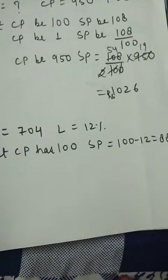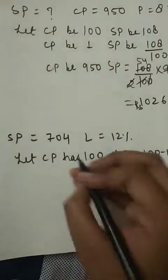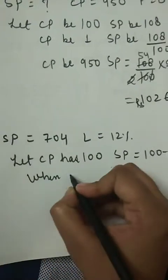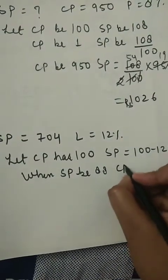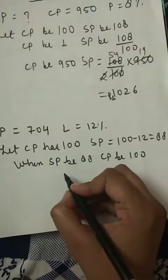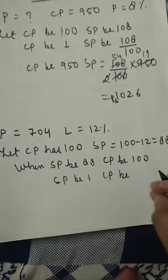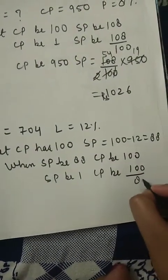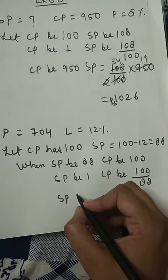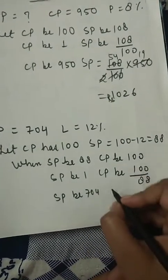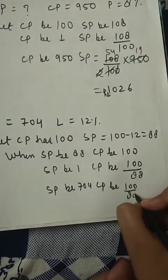Using the unitary method: when selling price is 88, cost price is 100. When selling price is 1, cost price is 100 upon 88. When selling price is 107 (as given in the question), cost price will be 100 upon 88 into 107.